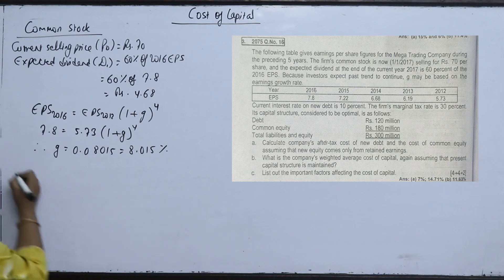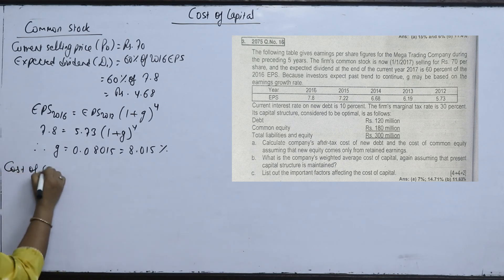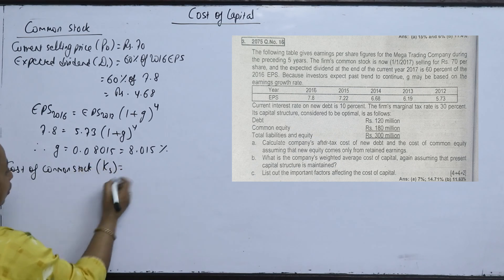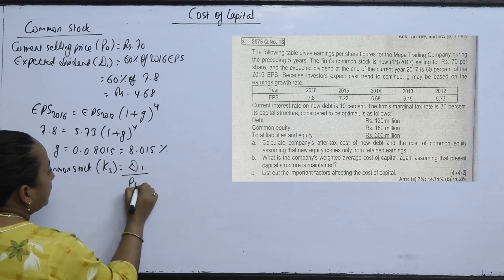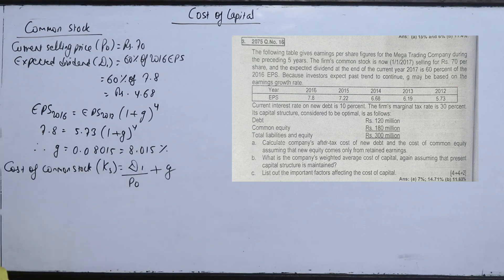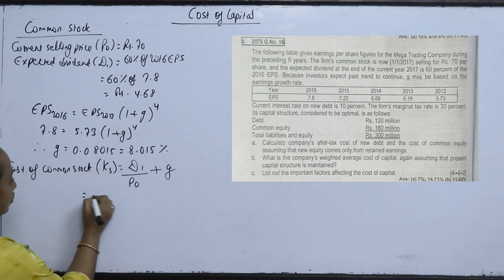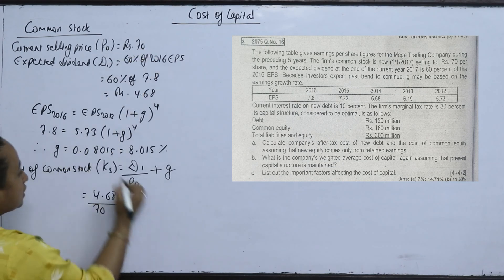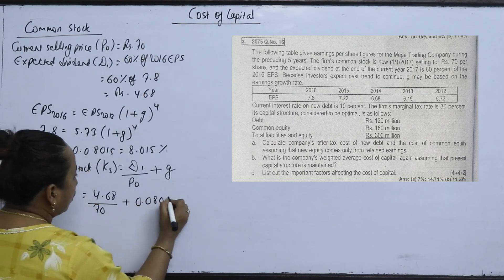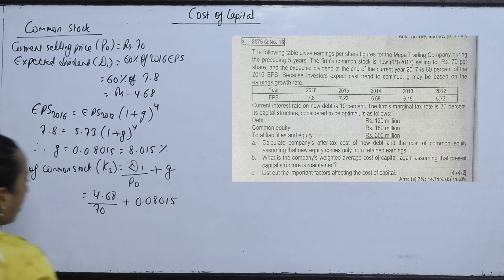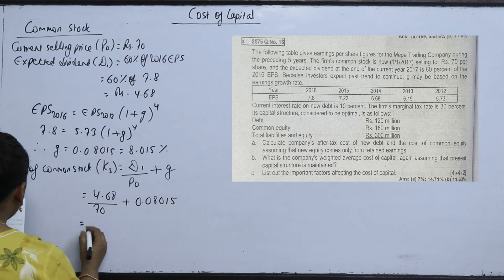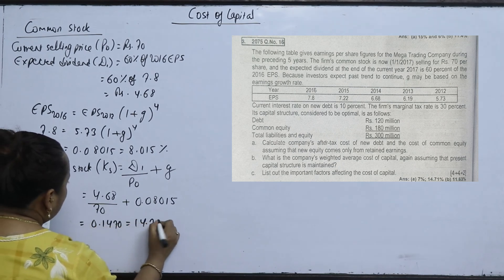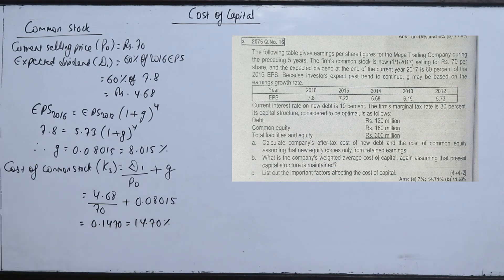The cost of common stock is Ks = D1 divided by P0 plus G. D1 is 4.68, P0 is 70, and G is 0.08015. Ks is calculated as 0.1470, which means 14.70%.